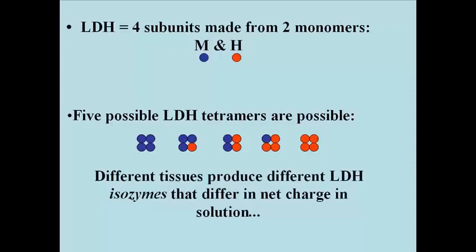In real life, some types of cells will have more H monomers in the LDH molecules, others more M monomers. In other words, there's an equilibrium in the concentration of all possible tetramers that tends towards M-rich or H-rich, or possibly equal amounts of all the tetramers, depending on the different proportions of the two monomers synthesized in the different cell types. Different versions of the same enzyme are called iso-enzymes, or isozymes for short.